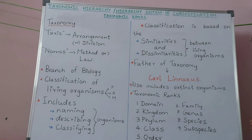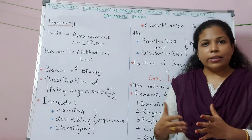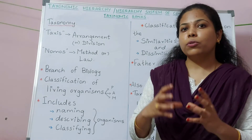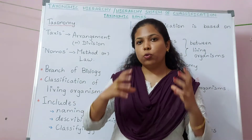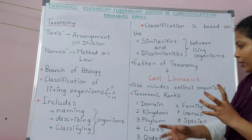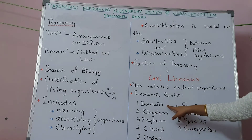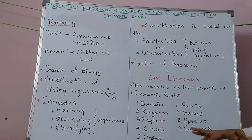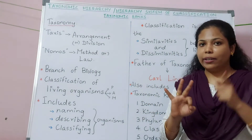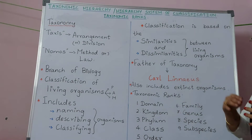Taxonomic ranks are the groups and subgroups in which we categorize organisms based on their similarities and dissimilarities. Domain is the highest taxonomic rank. All living organisms on earth are broadly classified into three domains: Archaea, Bacteria, and Eukarya. This domain can be further classified — for example, Eukarya can be divided into many kingdoms.